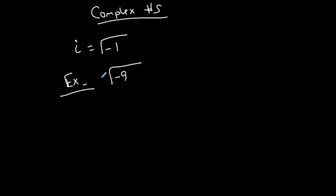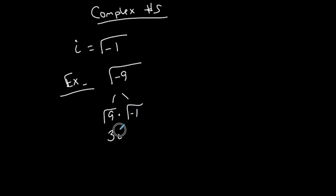If I said the square root of negative 9, you used to say that's undefined and it doesn't work. But now you can say it's a complex number. Here's the process: the square root of negative 9 is the same as the square root of 9 times the square root of negative 1. The square root of 9 is 3, and the square root of negative 1 is i. So the square root of negative 9 equals 3i in complex form.